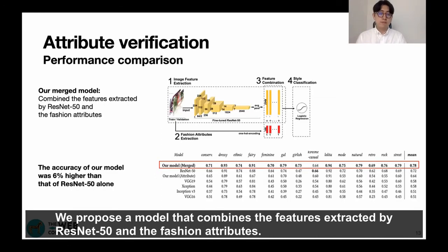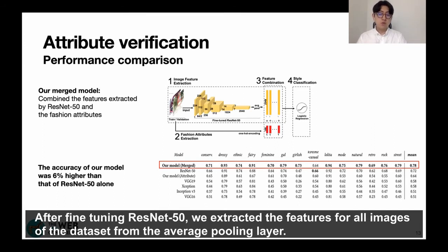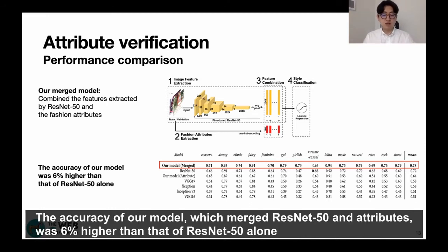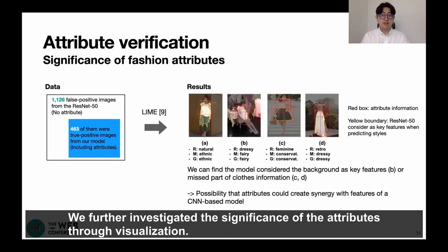We propose a model that combines features extracted by ResNet-50 and the fashion attributes. We use ResNet-50 that provides the highest performance as a feature extractor. After fine-tuning ResNet-50, we extracted features for all images of the dataset from the average pooling layer. Next, we combined the image features extracted from the fine-tuned ResNet-50 with our 146 fashion attributes to form finer features. The accuracy of our merged model was 60% higher than that of ResNet-50 alone, demonstrating that our attributes have a meaningful relationship with fashion style.